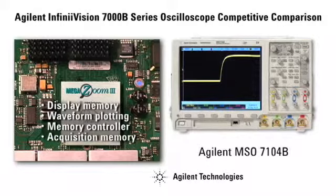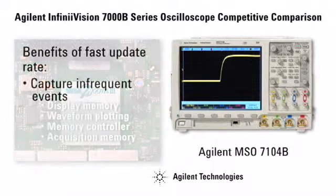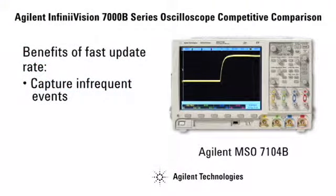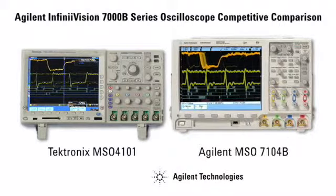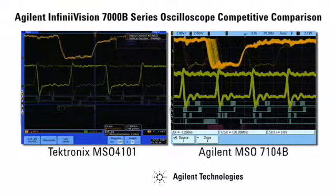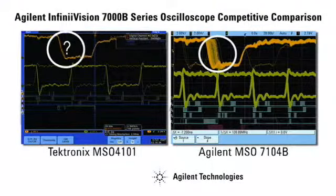Our engineering investment gives you the best signal visibility available. Capturing those random and infrequent events is clearly the most critical reason that fast waveform update rates are desirable. But the faster you're updating the screen, the more signal information you'll see on the screen at the same time. Agilent's InfiniVision scopes offer unmatched display quality and signal representation.